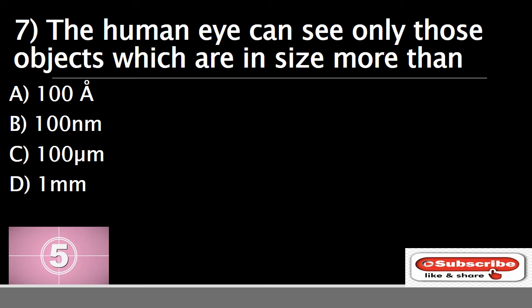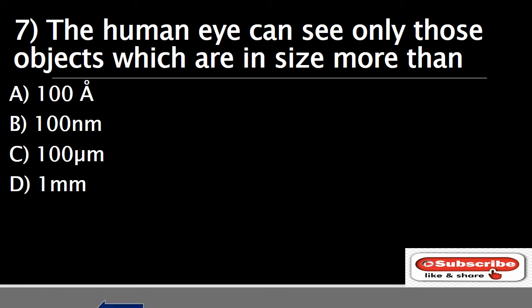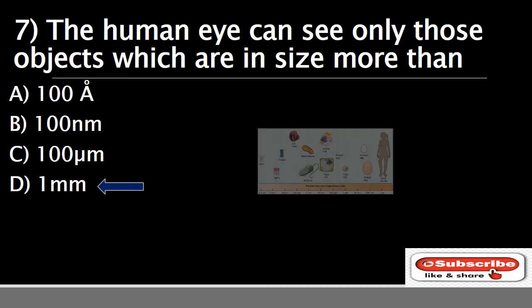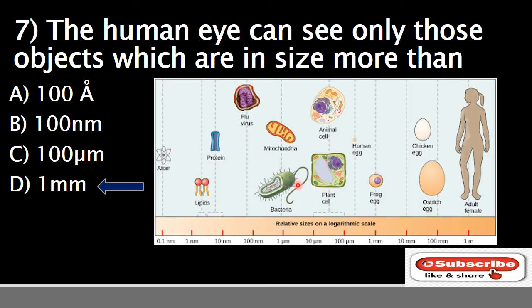Question number seven: the human eye can see only those objects which are in size more than — the options are A) 100 angstroms, B) 100 nanometers, C) 100 micrometers, or D) one millimeter. The correct answer is D) one millimeter. As the image sent to the eye by way of the lens increases, you see an object more easily. A normal eye with regular vision can see objects which are in size more than one millimeter, as you can relate from the scale shown.